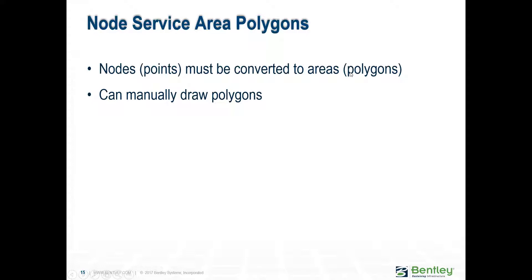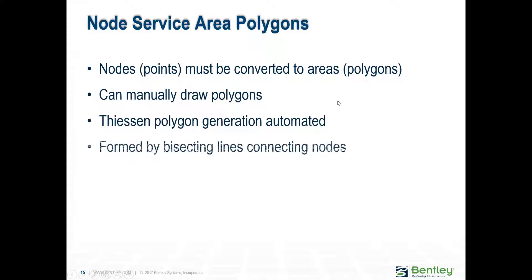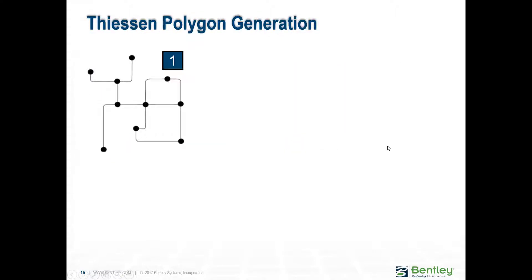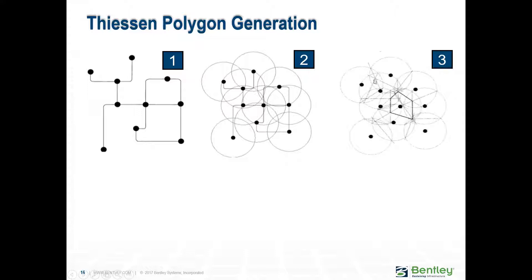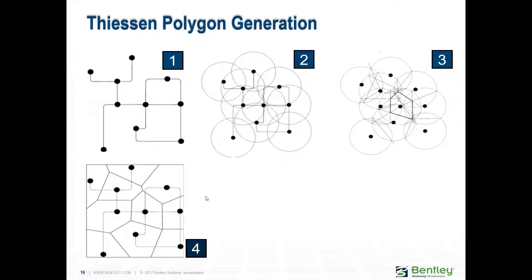If you're going to use node service polygons — the polygon around each of your manholes — you can create them externally or use the Thiessen Polygon tool. This tool shows your network with pipes and manholes, creates circles around them, finds the bisecting points, and produces Thiessen polygons for each of your nodes.